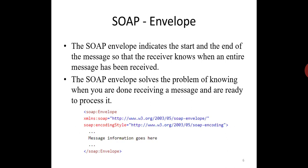In the below code, the namespace defines the envelope as SOAP envelope. And the encoding style attribute is used to define the data types used in the document.